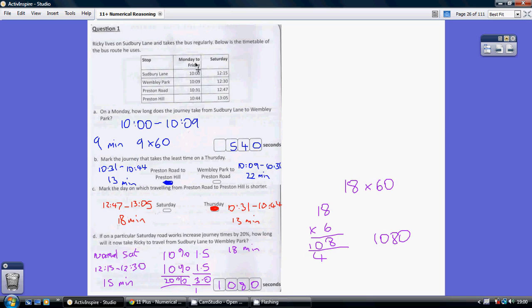And on a Thursday, obviously the Monday to Friday column, 10.31 to 10.44 is 13 minutes. So, the shorter journey is on a Thursday, because obviously 13 minutes is less than 18 minutes.